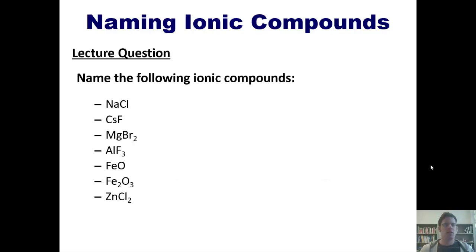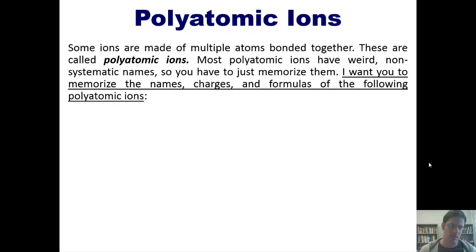Now let's turn to another subject, that of polyatomic ions. Some ions are made of multiple atoms bonded together. These are called polyatomic ions. Most polyatomic ions have weird non-systematic names, so you just have to memorize them. Now I want you, my students, to memorize the names, charges, and formulas of the following polyatomic ions.